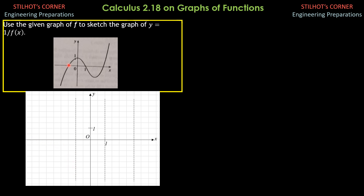Just to the right of the first vertical asymptote, the value of f of x is almost 0 but positive, so 1 over 0 but positive is positive infinity — the graph comes from positive infinity and goes down. When x is 0, f of x is 1 as shown in the figure, and 1 over 1 is 1, so the reciprocal curve also crosses through that point. Proceeding to the vertical asymptote at x = 1: just to the left of 1, f of x is almost 0 but positive, so 1 over almost 0 is positive infinity. The graph in this portion looks like this.